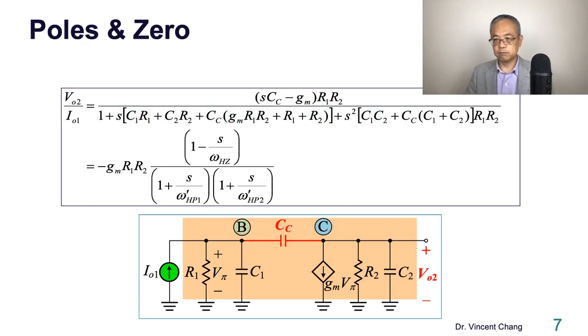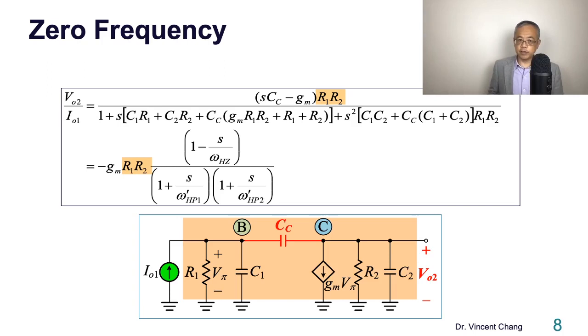I'll give you this. This is the precise exact transfer function. So it tells you one zero and two poles. One zero and two poles. So one zero and two poles.